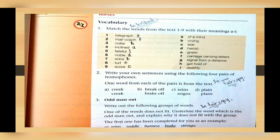Sixth word is noble, which you will match with D, which is heroic. Seven is sobs - sobs will be matched with its meaning, which is crying. Eight, turf - turf will be matched with E, which means grass. Nine is score - score will be matched with tear, which is number C. Hope you understood this exercise.